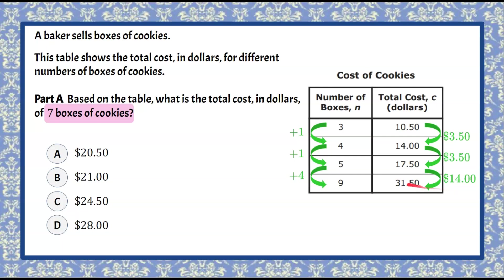So now we're ready to figure out what seven boxes of cookies would cost because we know that each box of cookies costs three dollars and fifty cents. So I know that I want to do seven times three point five on your calculator which is going to give you a total of twenty four dollars and fifty cents which is answer choice C.